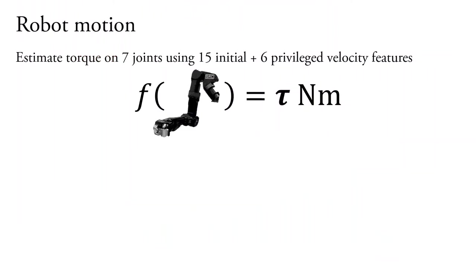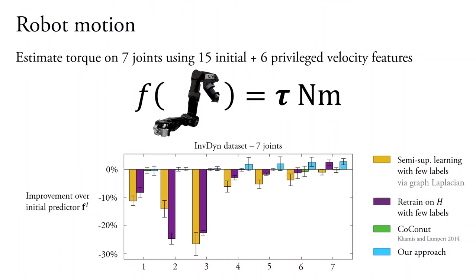One more example. This time we're going to attempt to estimate torque values for a robot arm using privileged information of velocity features. Here again, we see the potential danger of retraining without being able to select useful features. Our approach, instead, almost always improves the predictor.